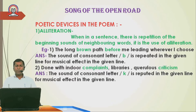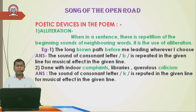In the poem 'The Song of the Open Road,' the poet uses different types of poetic devices. Number one is alliteration. First of all, you must understand what alliteration is. When in a sentence there is a repetition of the beginning sound of neighboring words, it is the use of alliteration.